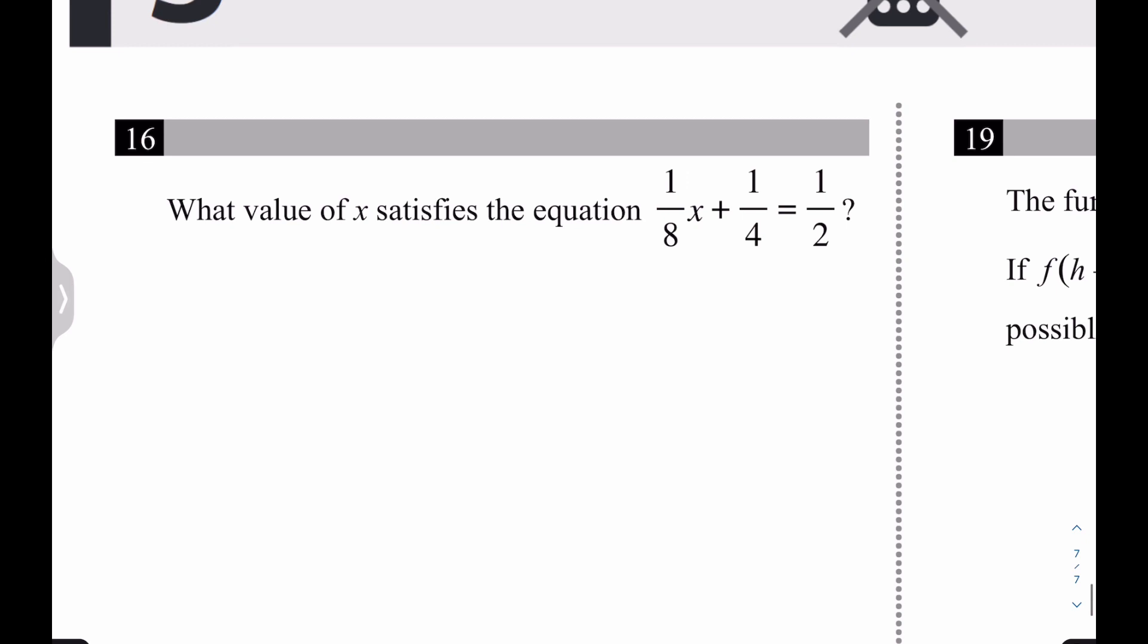This is just an easy solving problem. I have 1 over 8x plus 0.25 equals 0.5. Subtracting 0.25 from both sides, I have 1 eighths x equals really 1 fourth. How do you get rid of a fraction on something? You multiply by the reciprocal. So I'm going to multiply both sides by 8. And x is equal to 2. Amazing.